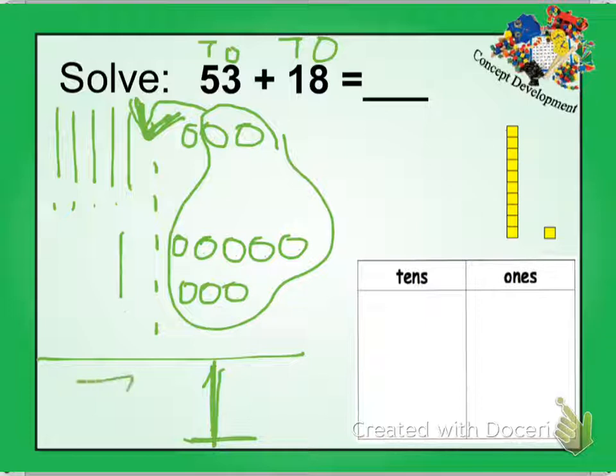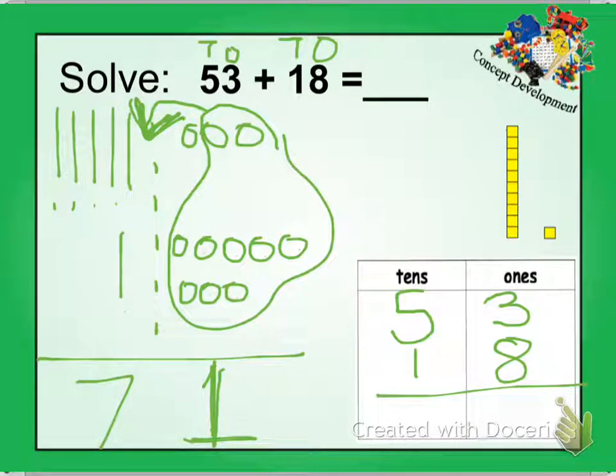So 53 plus 18 is 71. Now let's look at it in the place value chart. I'm going to just write 53 and 18 like this. So now look, it's almost the same thing as our picture. 53 has three ones and 18 has eight ones.